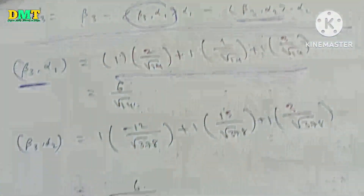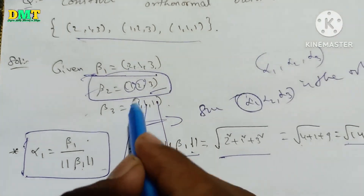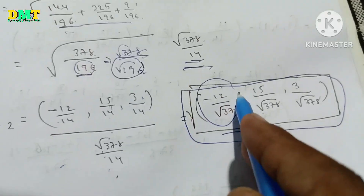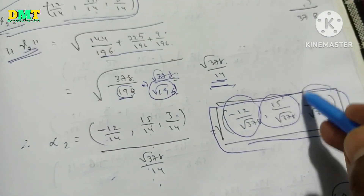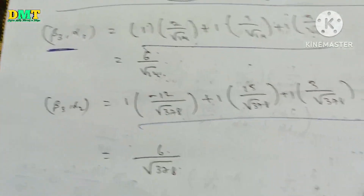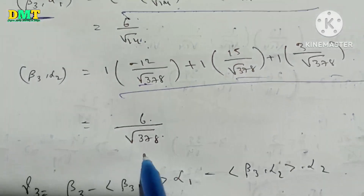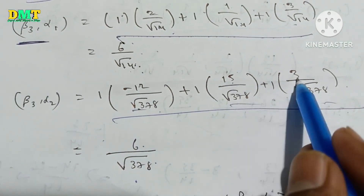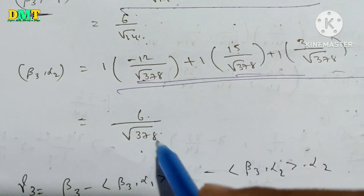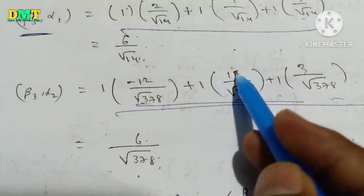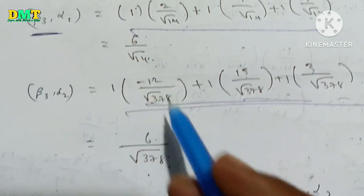Next, beta3 comma alpha2. It's the same path. Once we compute the inner product with alpha2, we change this value. The numerator is minus 12 plus 15 plus 3, and the denominator is root378. So 15 plus 3 is 18, minus 12 is 6, giving beta3 comma alpha2 equal to 6/root378.